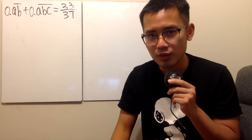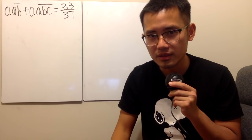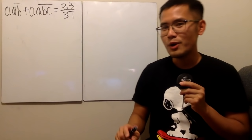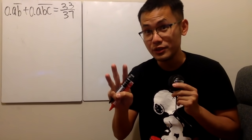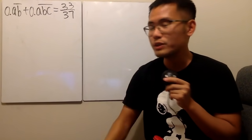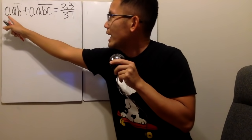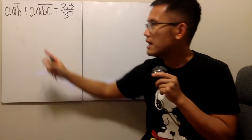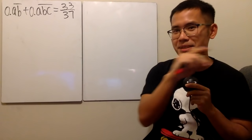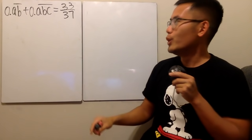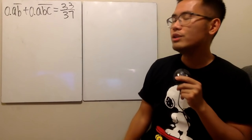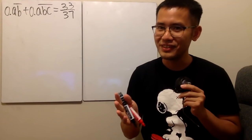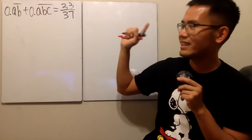We are looking for three digits A, B, C so that if we have 0.ABABAB... forever plus 0.ABCABCABC... forever, we will end up with the nice fraction 33 over 37. Please pause the video and try this first.